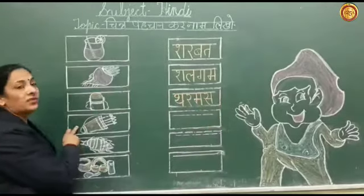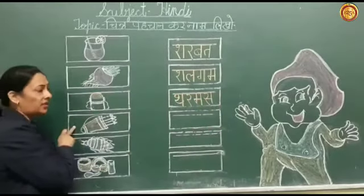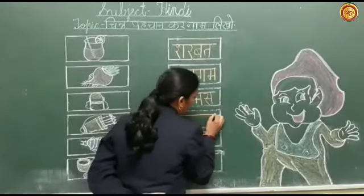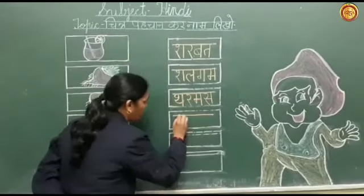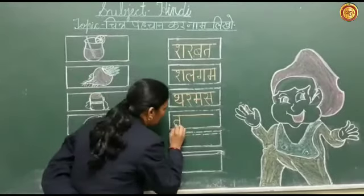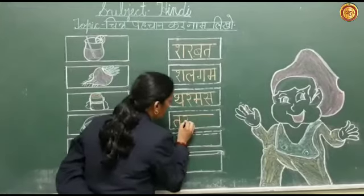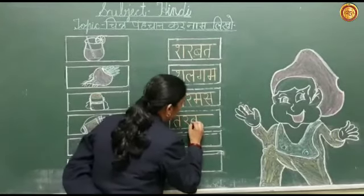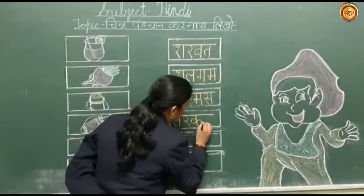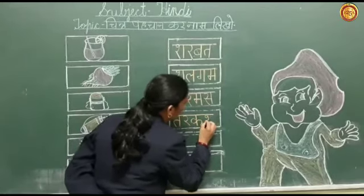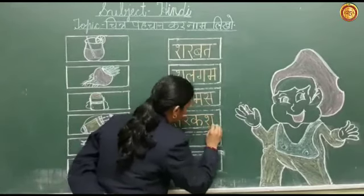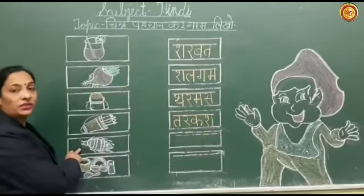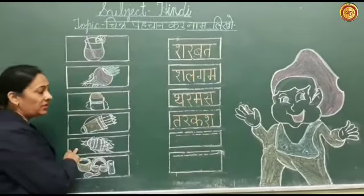Now this is the picture of Tarkash. It is Tarkash's picture — we have written Tarkash. Now this is the picture of Khatmal. It is Khatmal's picture.